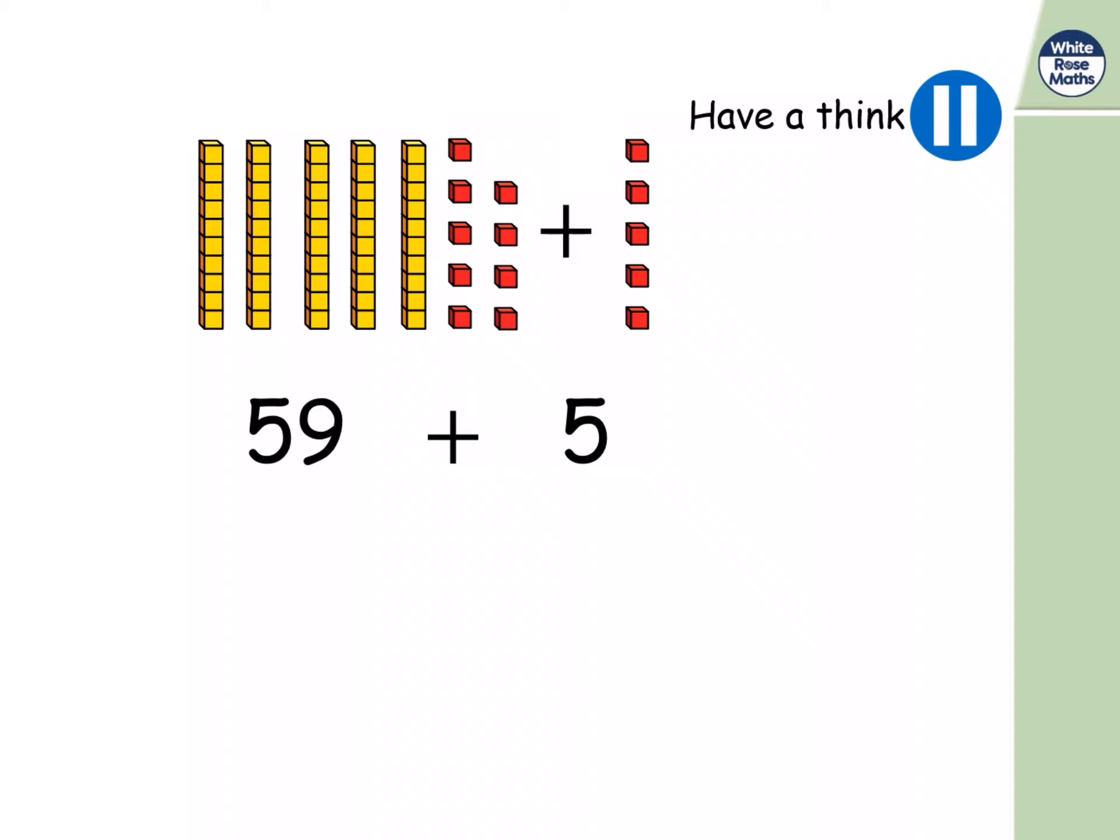That's right. I could have done five plus five, like I did last time in exchange for a ten. Or I can partition my five into four and one. Taking the one over to make ten and exchanging those ten ones for a ten. So now I have sixty plus four, which is sixty-four. Just like fifty-nine plus five is sixty-four. What a really good mental strategy, making ten.